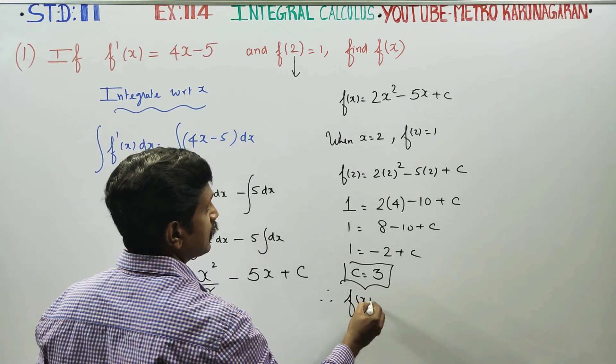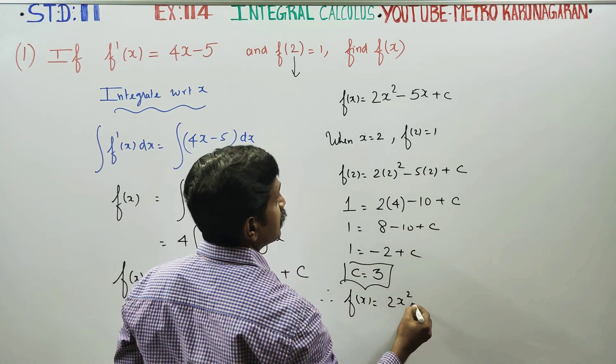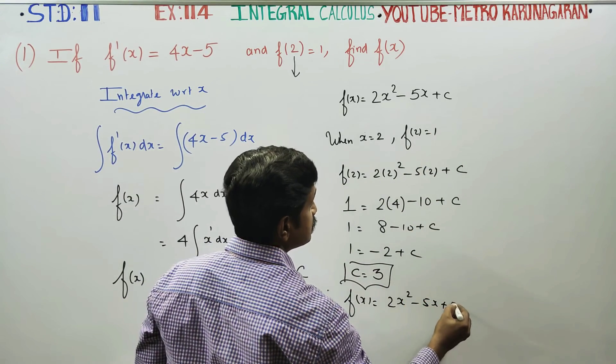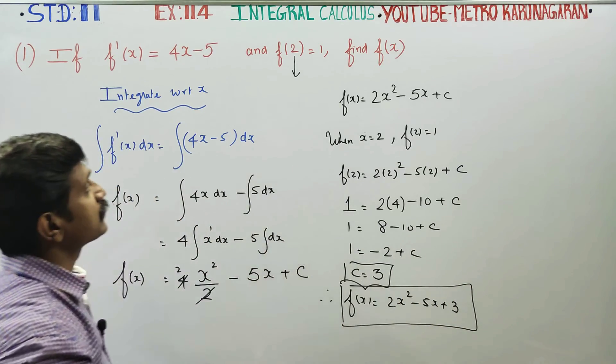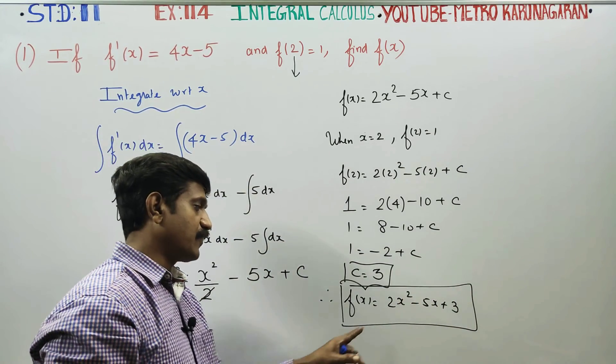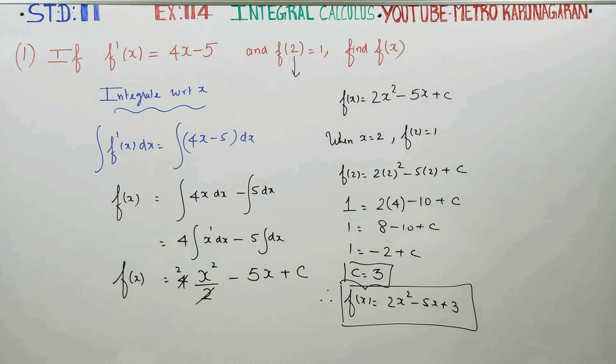Substitute C = 3. Therefore, my f(x) will be 2x² minus 5x plus 3. This is the required function. Your f(x) is 2x² minus 5x plus 3. Thank you.